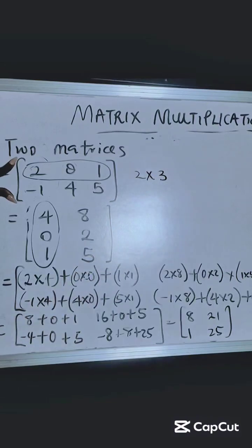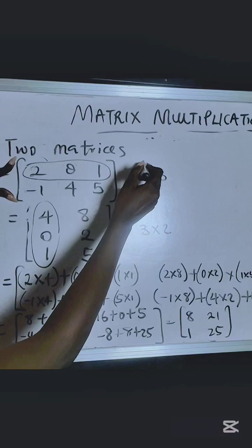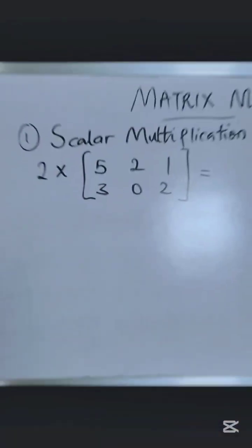A 2 by 3 matrix multiplied by a 3 by 2 matrix ended up giving us a 2 by 2 matrix, which is this. So in matrix, we have what we call scalar multiplication.